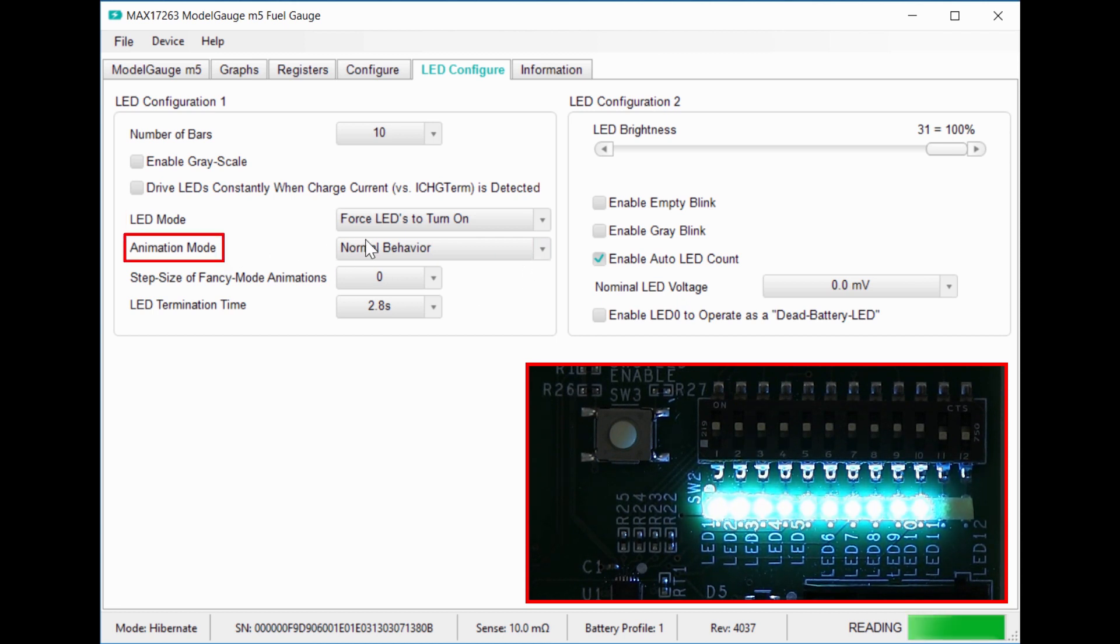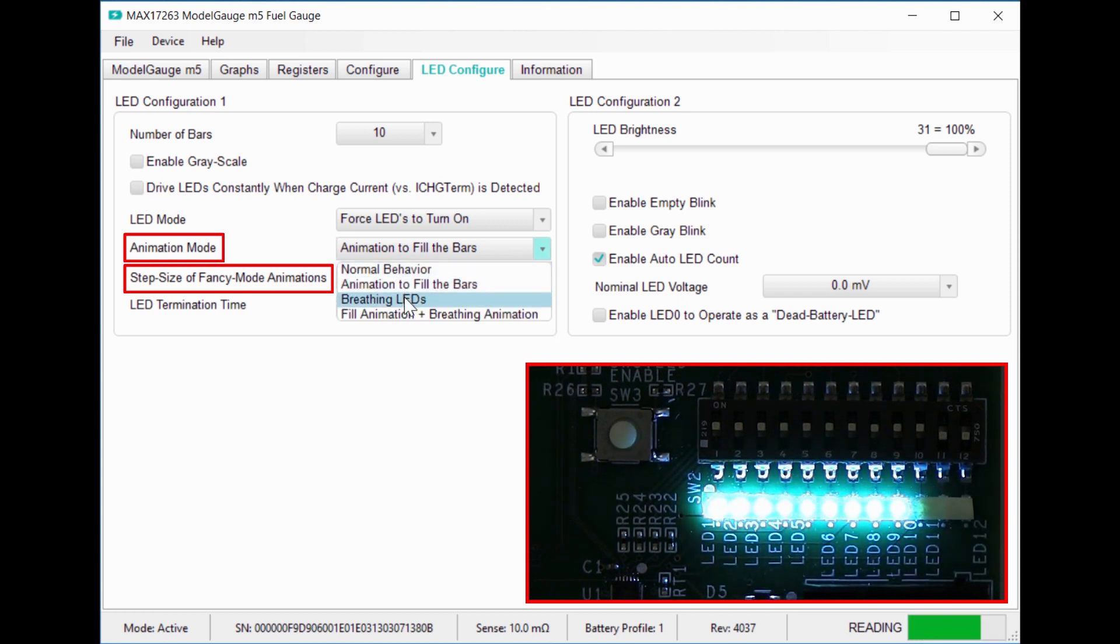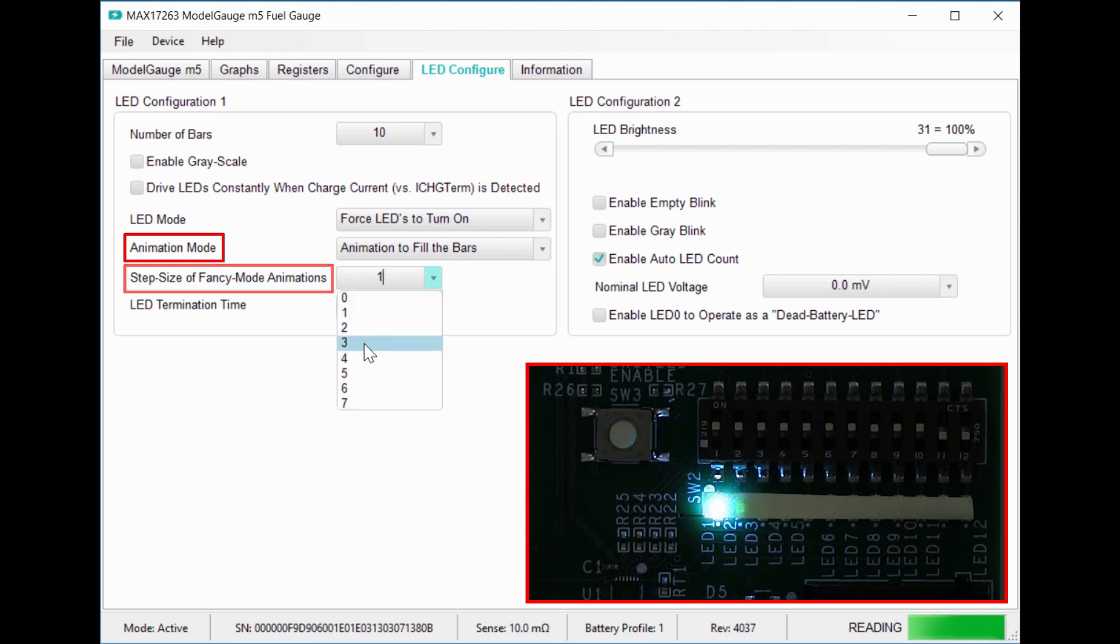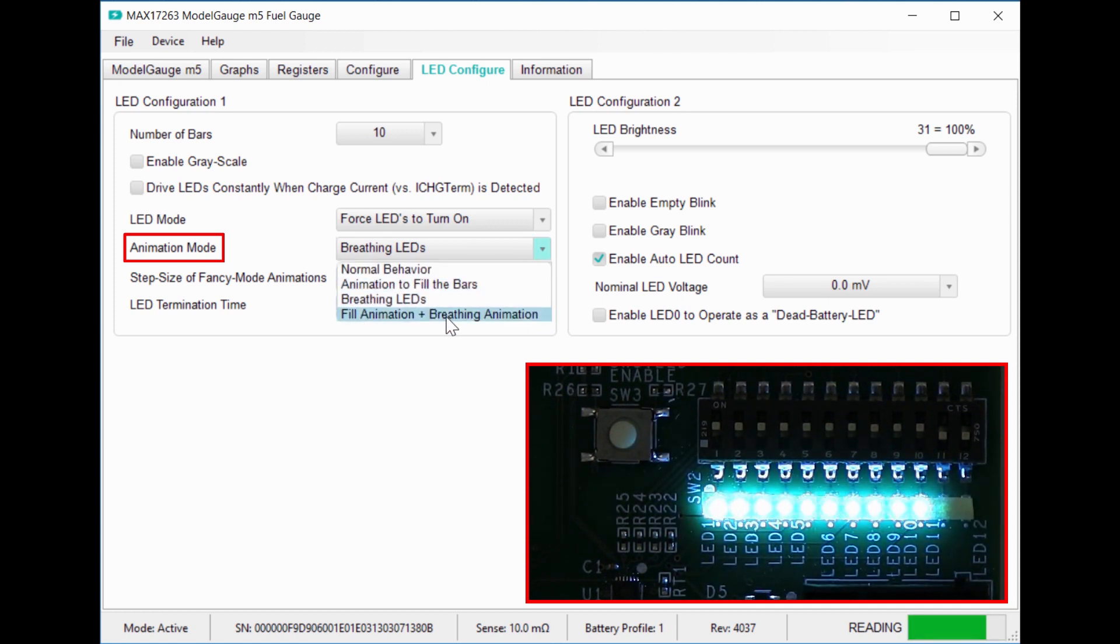The animation mode gives you some options on how the LEDs light up, and the step size sets the speed. This fill bars animation does this, and if I change the step size to 3, it goes three times faster. The breathing LEDs animation fades them in and out like this, or you can combine them like this. Okay, let's reset the normal behavior and check out the other features.